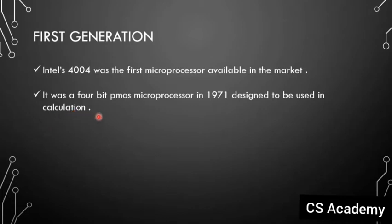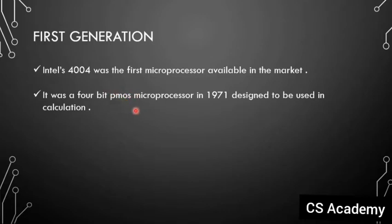The Intel 4004 was a 4-bit PMOS microprocessor introduced in 1971, designed to be used in calculation. The computation of logical functions was performed using this microprocessor. So the first generation Intel 4004 is a 4-bit PMOS microprocessor.